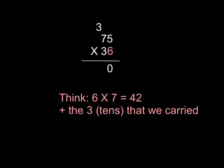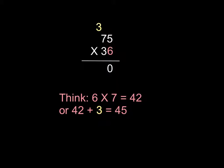So six times seven plus three is forty-five, because six times seven is forty-two. Forty-two plus three is forty-five, and that's really what you want to think in your head.